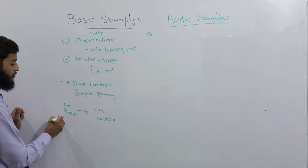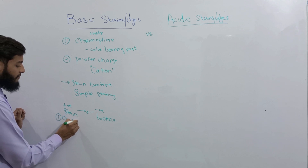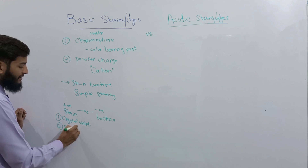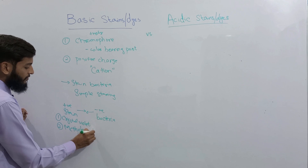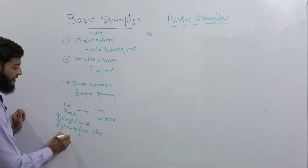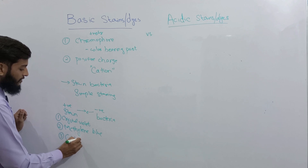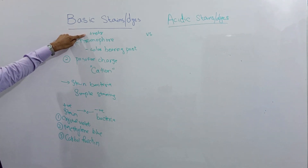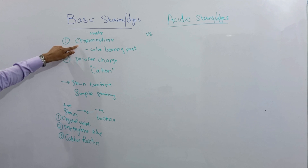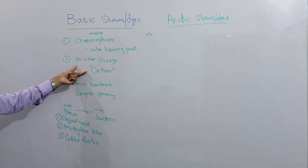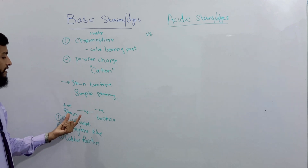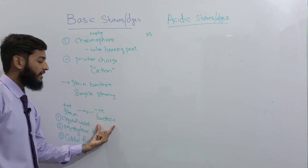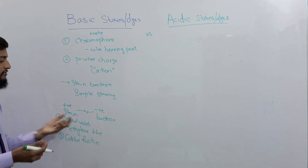Examples of basic stains include crystal violet, methylene blue, and carbol fuchsin. So basic stains are positively charged, contain two parts — the first part is known as the chromophore and the second part is a cation containing a positive charge. They very easily stain bacteria because they have a positive charge on them and bacteria have an overall net negative charge, so it is very easy for us to stain the bacteria.